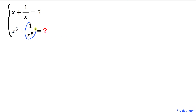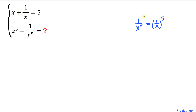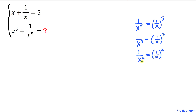Let's focus on 1 over x power 5. Here, 1 on the numerator could be written as 1 power 5, so we can write this as 1 over x whole power 5. Therefore, 1 over x power 5 could be written as (1/x) power 5, and likewise 1 over x power 3 as (1/x) power 3, and same for 1 over x square.